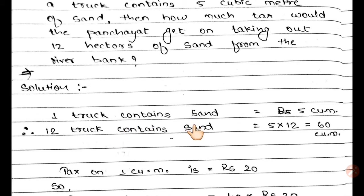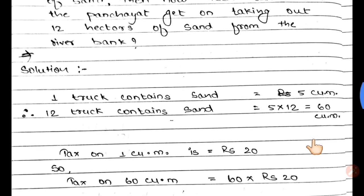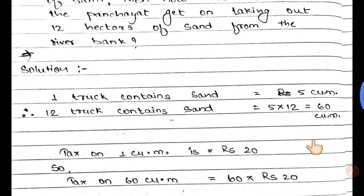1 truck contains 5 cubic meters of sand, so 12 trucks contain 5 × 12 = 60 cubic meters of sand.